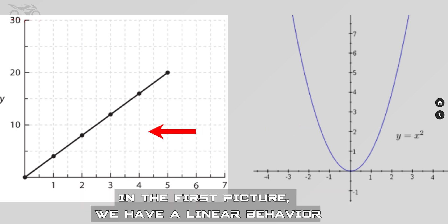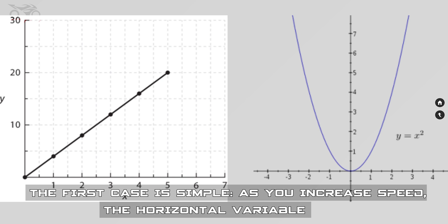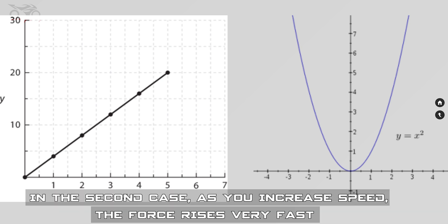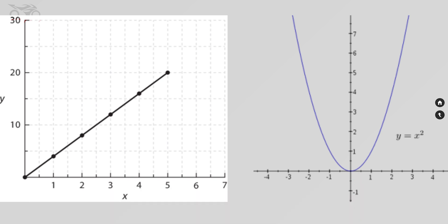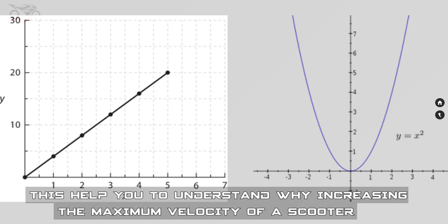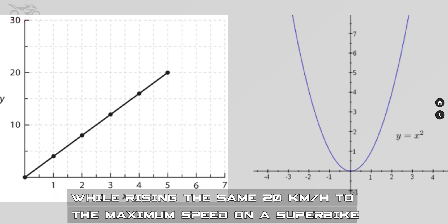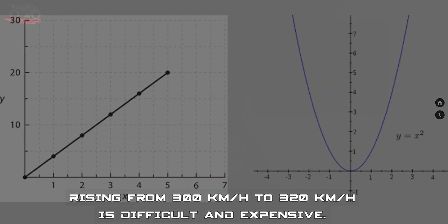In the first picture you have a linear behavior; in the second, a quadratic behavior. In the linear case, as you increase speed, the force increases in direct proportion. In the quadratic case, the force rises very fast, especially after leaving the low-speed section of the curve. This helps you understand why increasing a scooter's maximum speed from 50 to 70 km/h is relatively cheap and straightforward, while gaining the same 20 km/h on a superbike — from 300 to 320 km/h — is difficult and expensive.